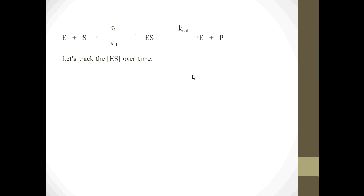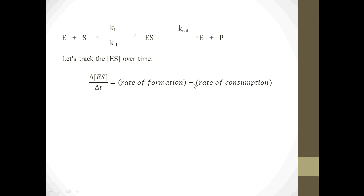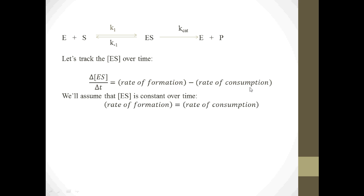To get to our destination, the Michaelis-Menten equation, I'm going to track the enzyme-substrate complex ES over time by writing its kinetics equation. Delta ES over delta T, the net rate of change of ES, equals its rate of formation minus its rate of consumption. The crucial assumption we make for Michaelis-Menten analysis is that ES is constant with respect to time. So delta ES over delta T equals zero, which means algebraically that the rate of formation of ES equals its rate of consumption.